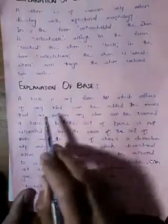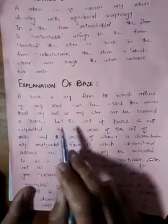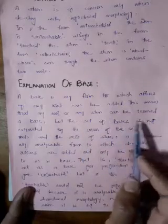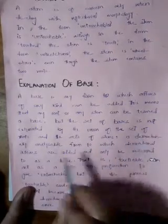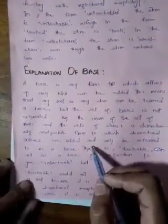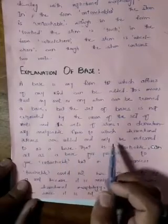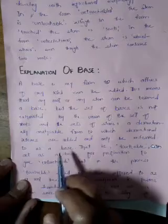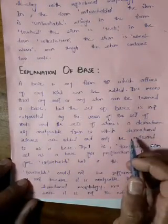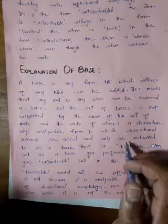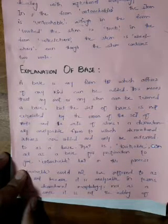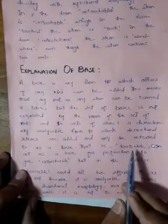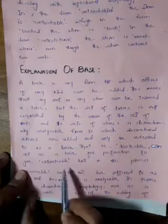A base is any form to which affixes of any kind can be added. This means that any root or any stem can be termed a base. However, the set of bases is not exhausted by the union of the set of roots and the set of stems. A derivationally analyzable form to which derivational affixes are added can only be referred to as a base. A base is concerned when dealing with derivational morphology.